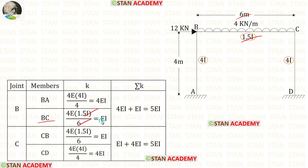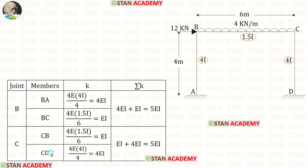For the stiffness of BC we are getting EI. We know that the stiffness of BC and CB will be the same. Now let us find the stiffness for CD. The length of CD is 4 and the moment of inertia for CD is 4I. After the calculation we are getting 4EI.